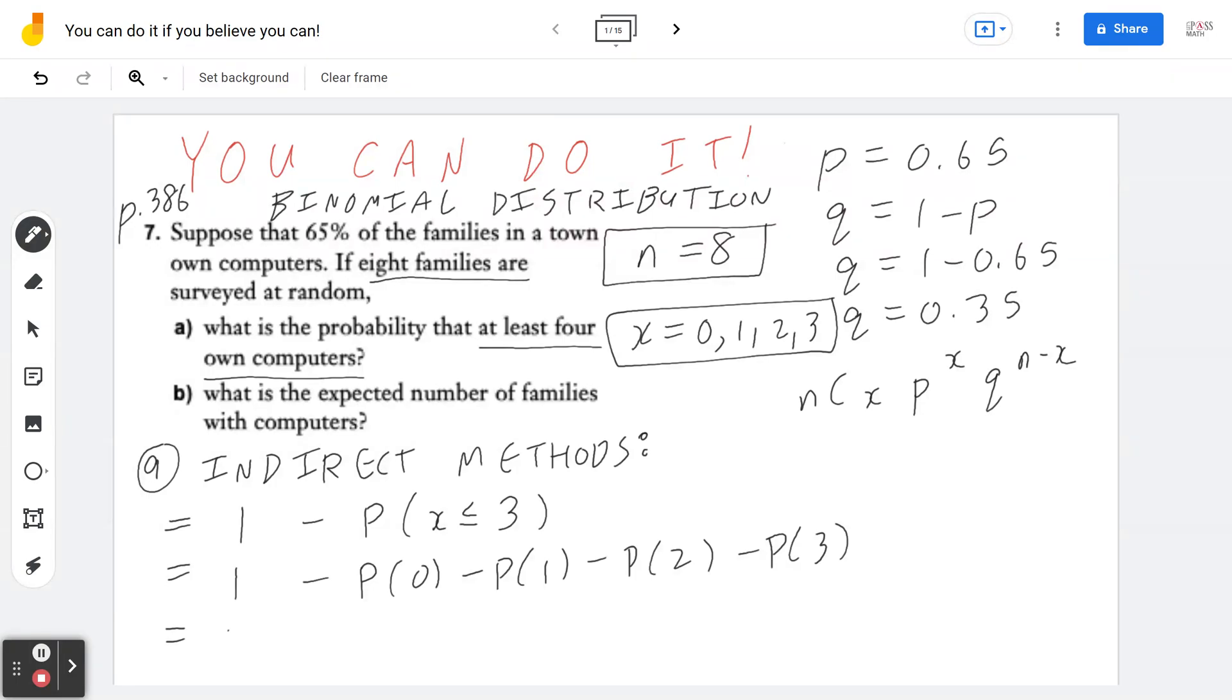Let's go back and keep going. So it's going to be 1 minus the probability of 0 is going to be basically 8 choose 0 times 0.65 to the power of 0 times 0.35 to the power of 8 minus 0, which is 8 minus.